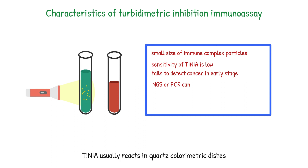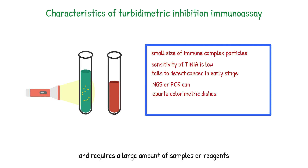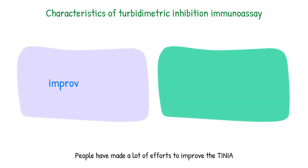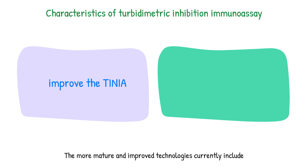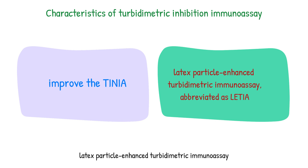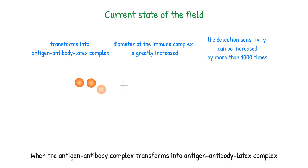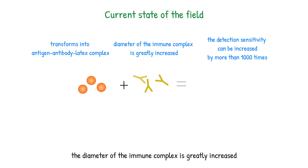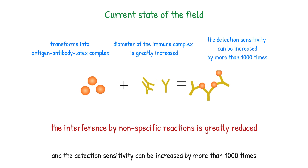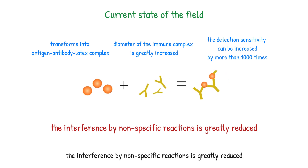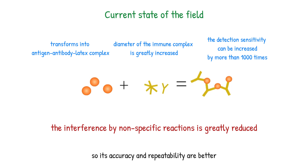In addition, TINIA usually reacts in quartz colorimetric dishes and requires a large amount of samples or reagents, resulting in high costs. People have made a lot of efforts to improve TINIA. The more mature improved technology currently includes latex particle-enhanced turbidimetry immunoassay, abbreviated as LEDIA. LEDIA is a method of binding antibodies to tiny latex particles. When the antigen-antibody complex transforms into an antigen-antibody-latex complex, the diameter of the immune complex is greatly increased, its detection sensitivity can be increased by more than a thousand times, the interference by non-specific reactions is greatly reduced, and its accuracy and repeatability are better.